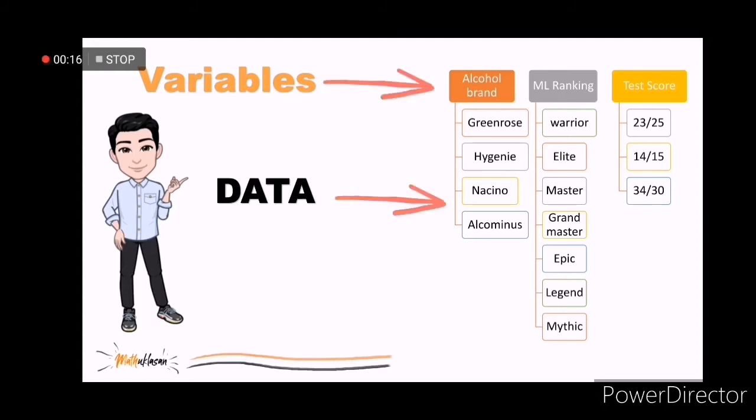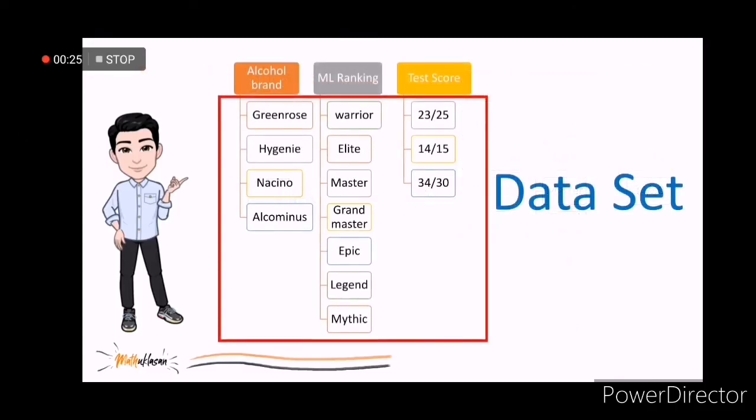If your variable is ML ranking, the possible data are warrior, elite, master, grandmaster, and so on. Now, the collection of data values is called dataset.